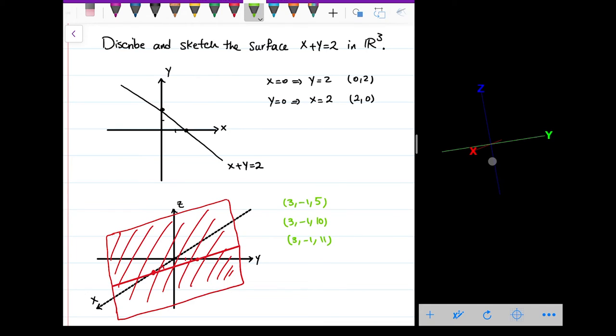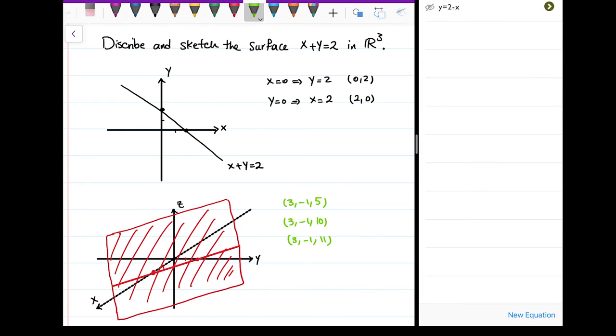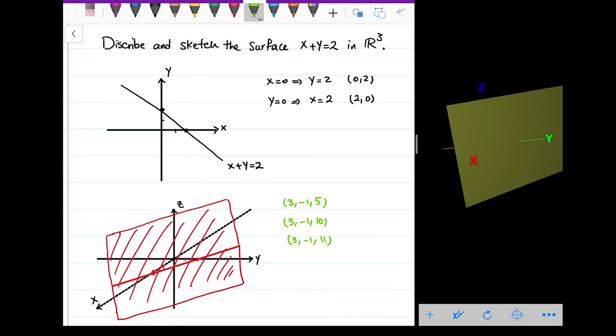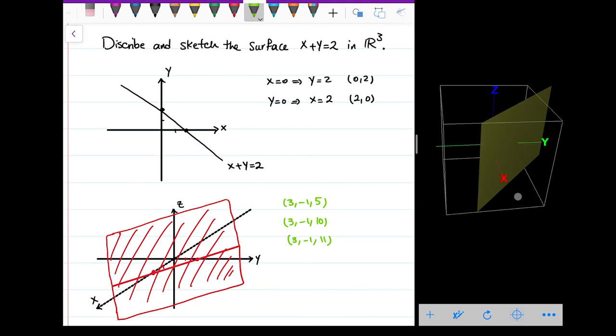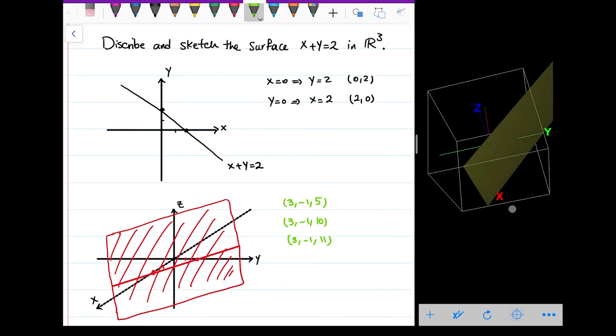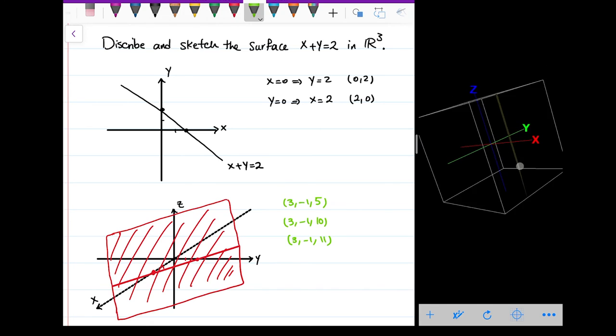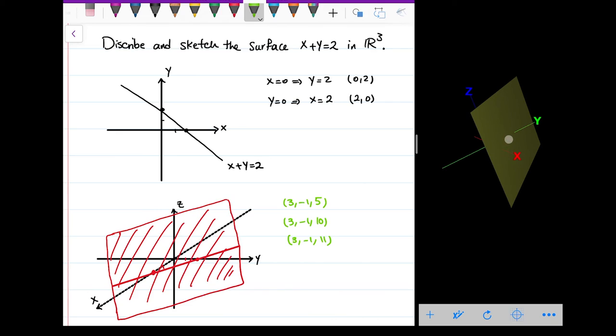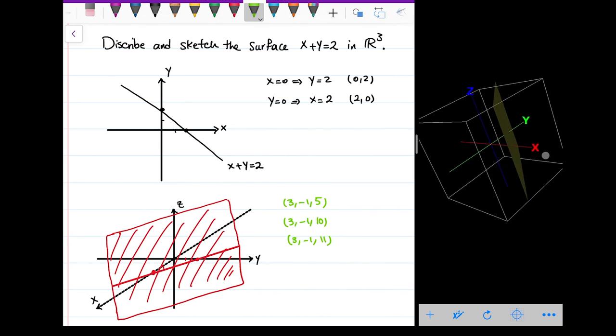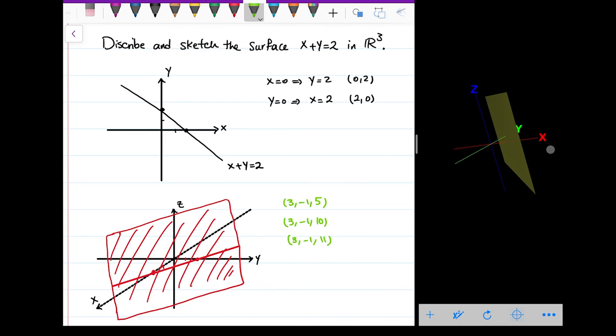...are in this line, so let me show it to you on this shape. Let me graph it. As you see, it's a plane because z is free, z can be anything. But basically, if I have the horizontal plane x-y, then it would be just the line, but now I have a complete plane as you see here.